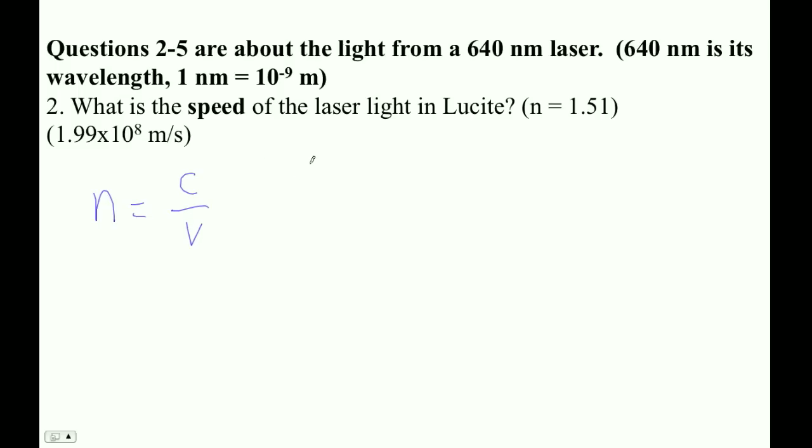The formula we're using is n equals c over v. c is the speed of light, 3.00 times 10 to the eighth meters per second. When we say it's the speed of light, we mean the speed of light in a vacuum, or more or less the speed of light in air. It's only slightly slower in air.